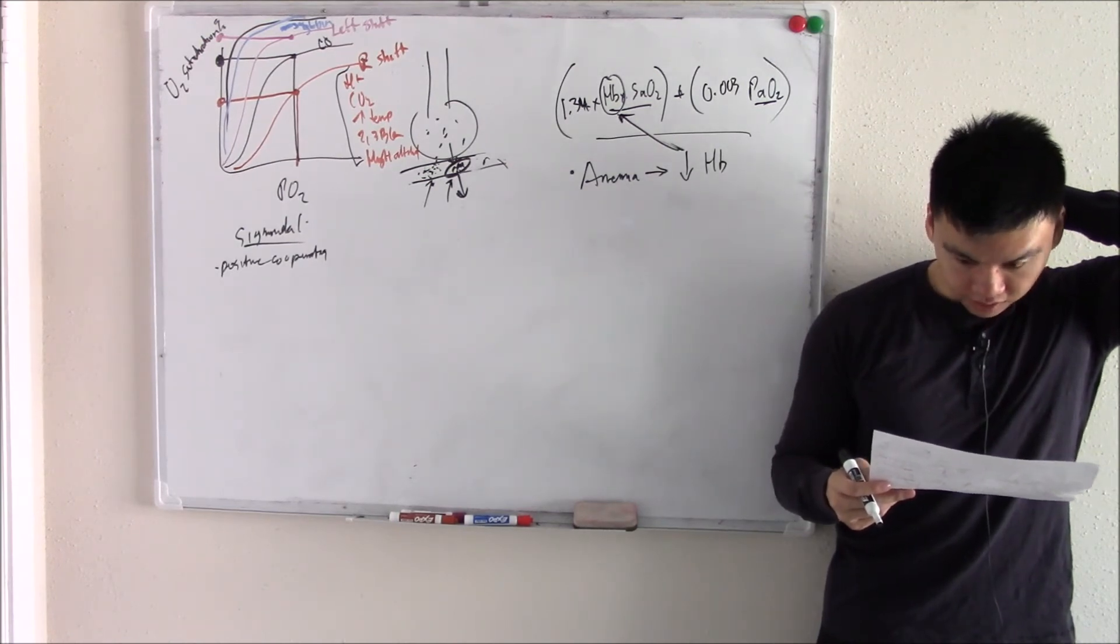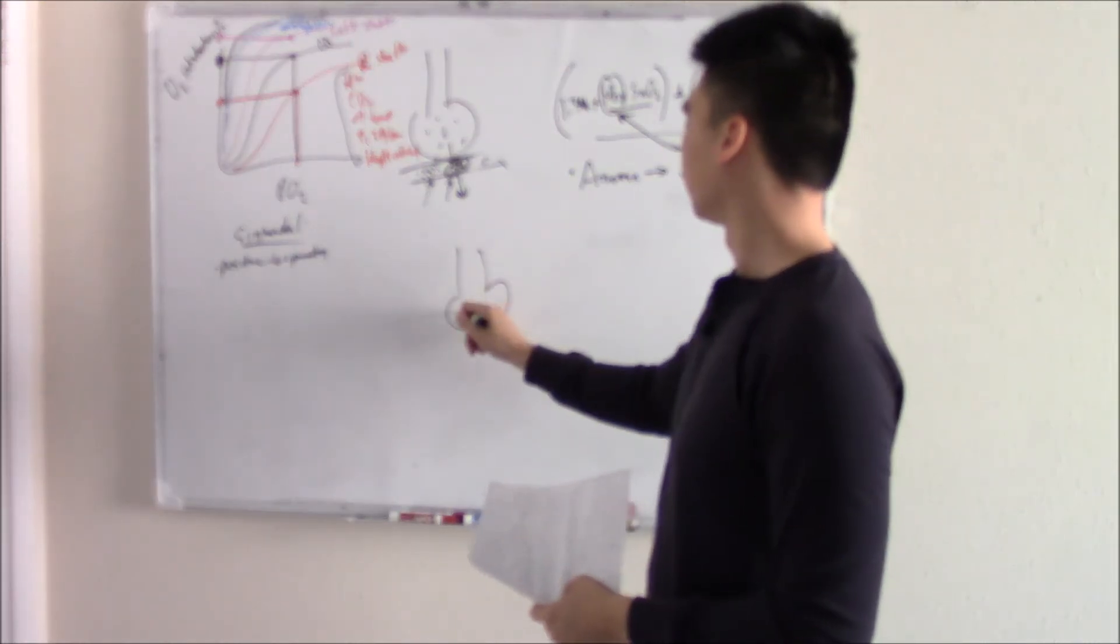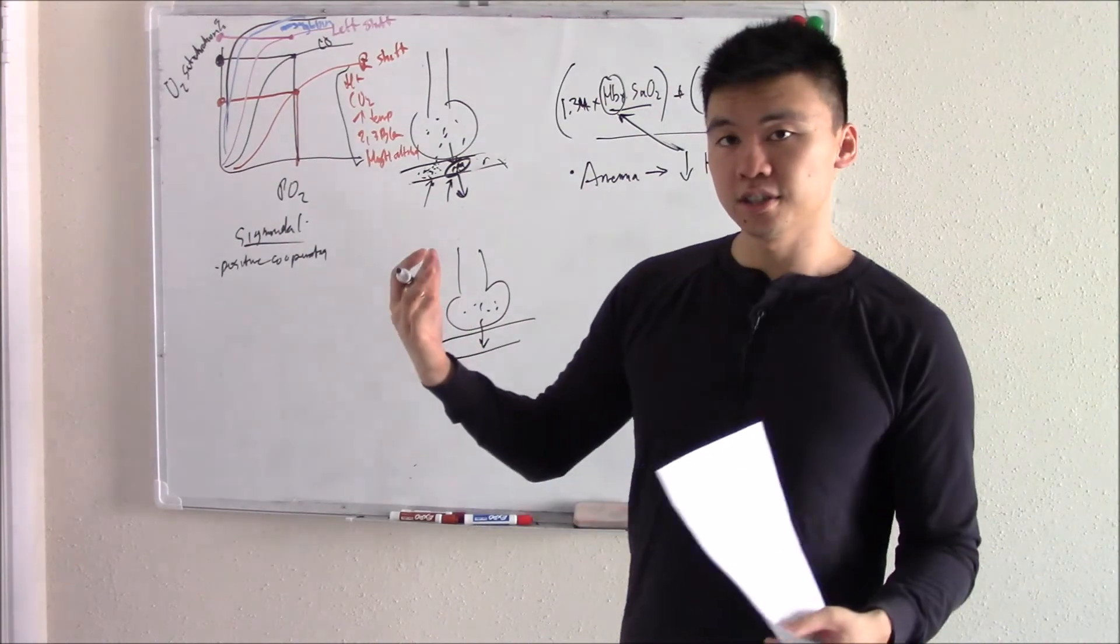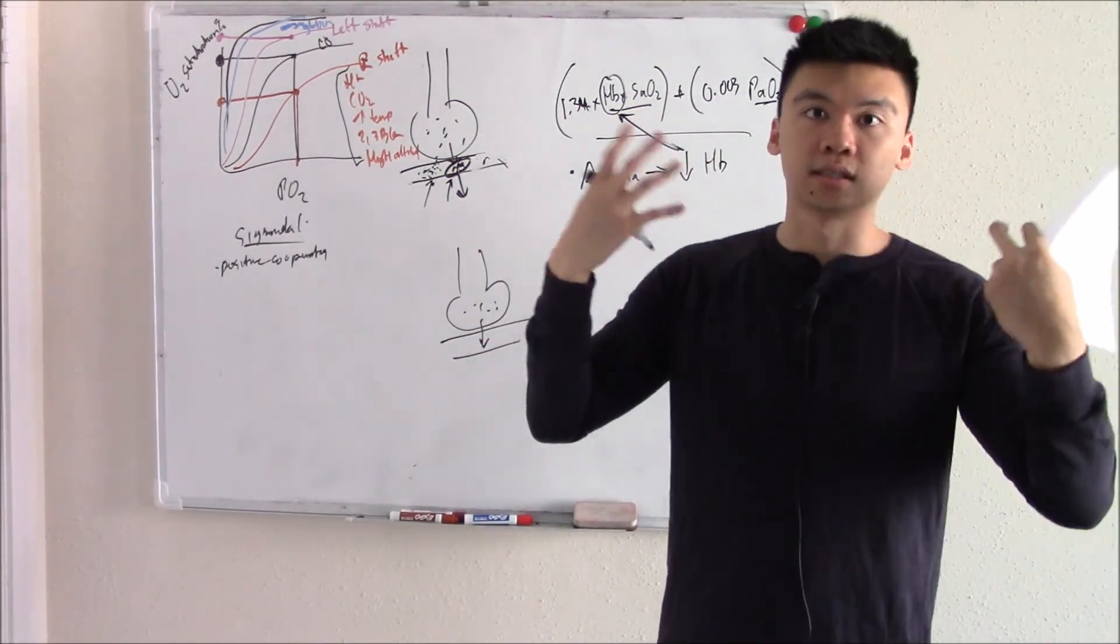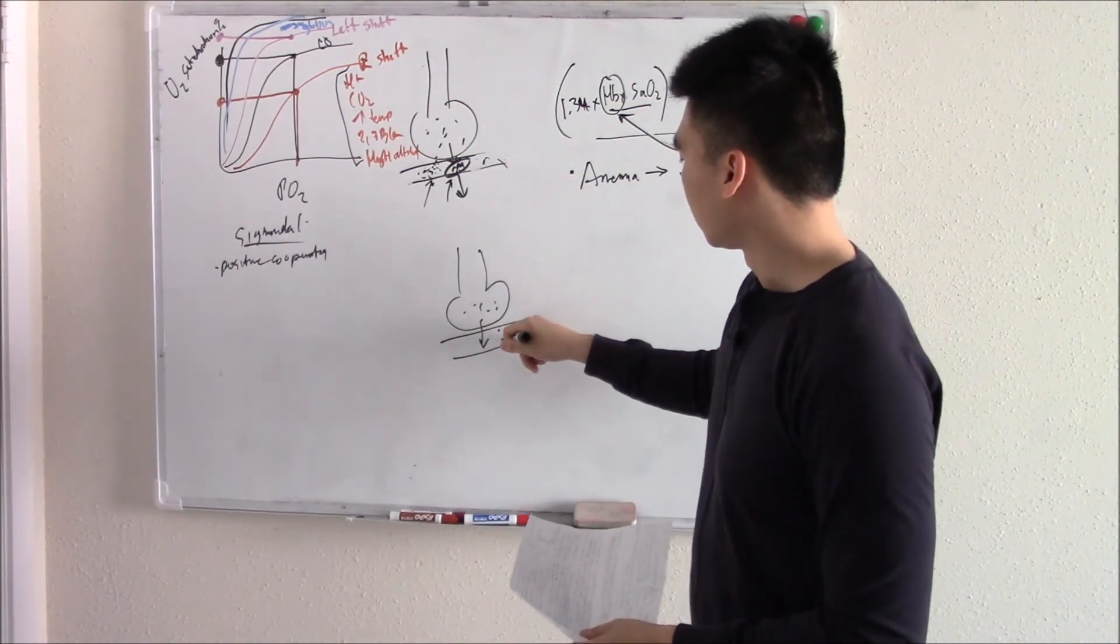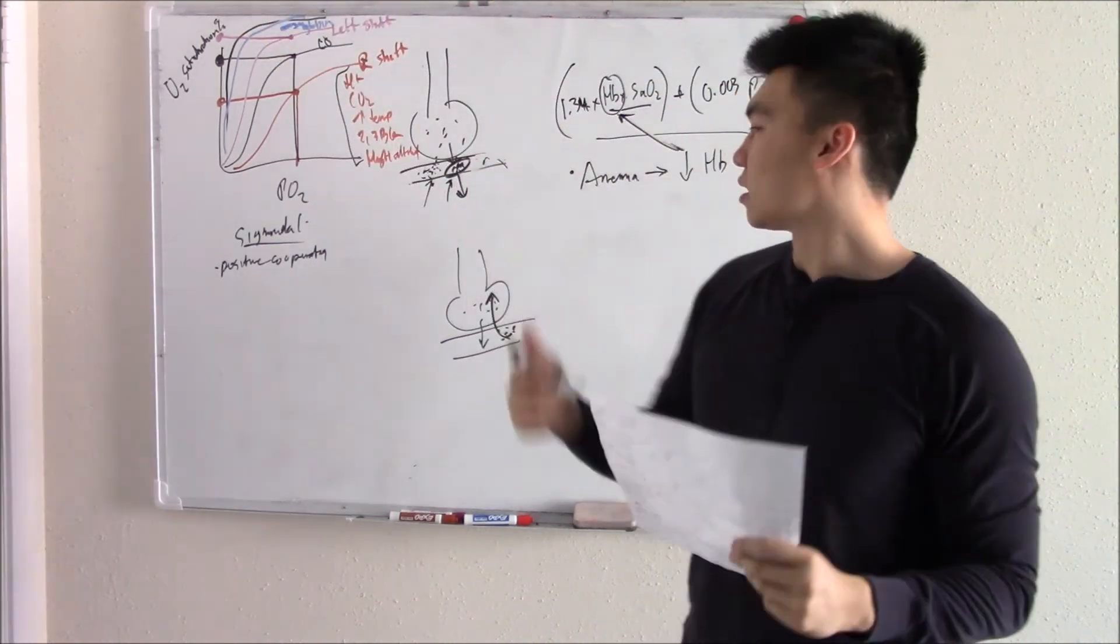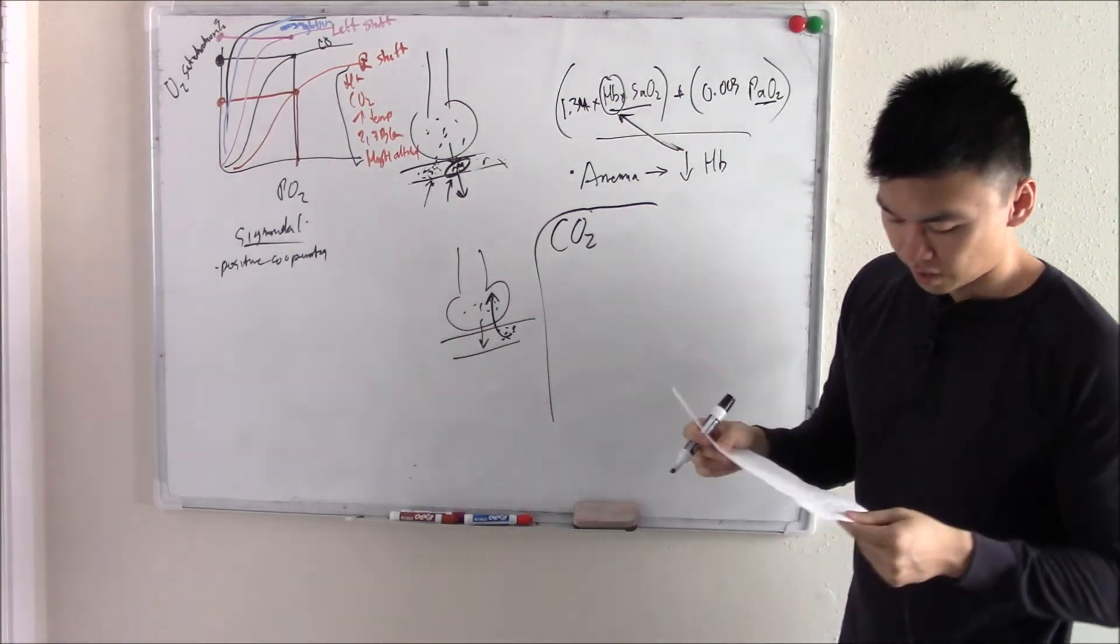Now let's talk about our friend CO2. We said you take a deep breath in. Oxygen is here, oxygen goes to your blood, goes to your tissue. And then after you use up all the oxygen, you will release CO2 as a byproduct. And that CO2 moves back into your lung and you breathe out that CO2. So let's talk about CO2, the other side of the coin.